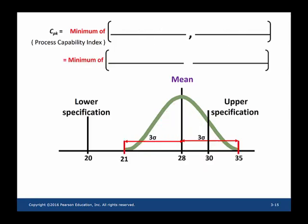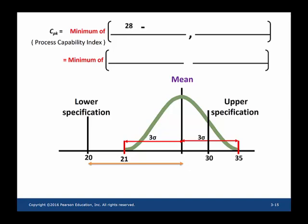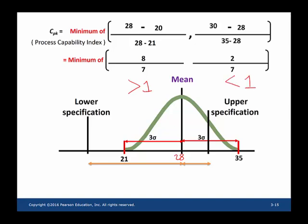Using numbers: the mean is 28 and lower specification is 20, so mean minus LSL = 8, divided by three sigma of 7 (28 minus 21), giving 8/7. Upper specification is 30 minus mean 28 = 2, divided by three sigma of 7 (35 minus 28), giving 2/7. The first ratio is greater than one, but the second ratio is less than one. Since the second ratio is less than one, the process is not capable.